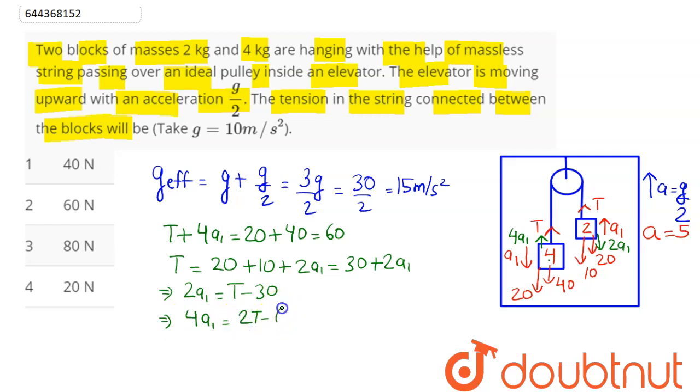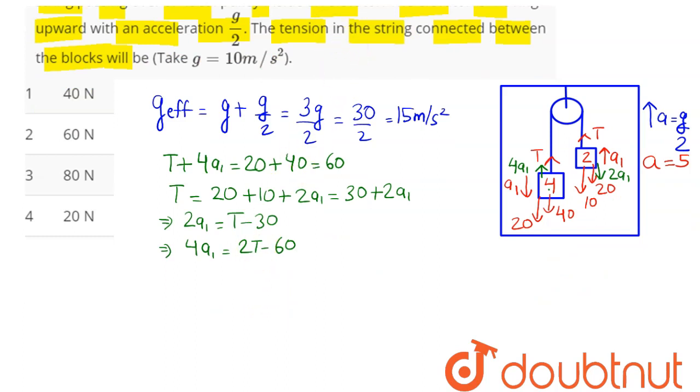Hence we can say here value of 4a1 comes out here as 2T minus 60. Now substituting the value of 4a1 in equation number one, so from one and equation number two we can say this comes here...